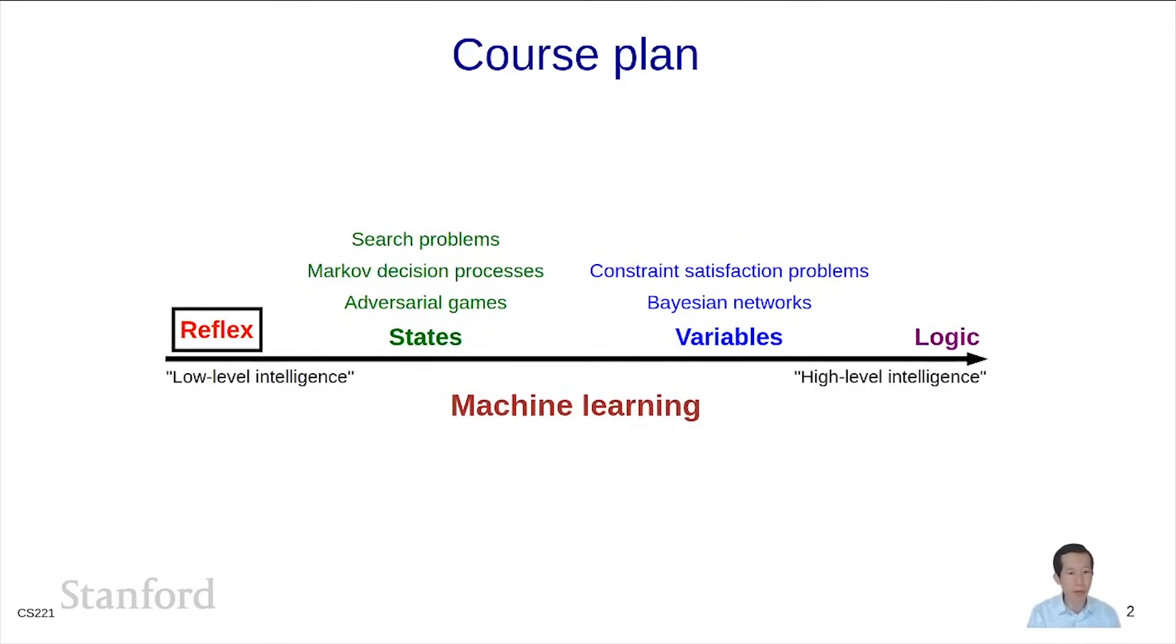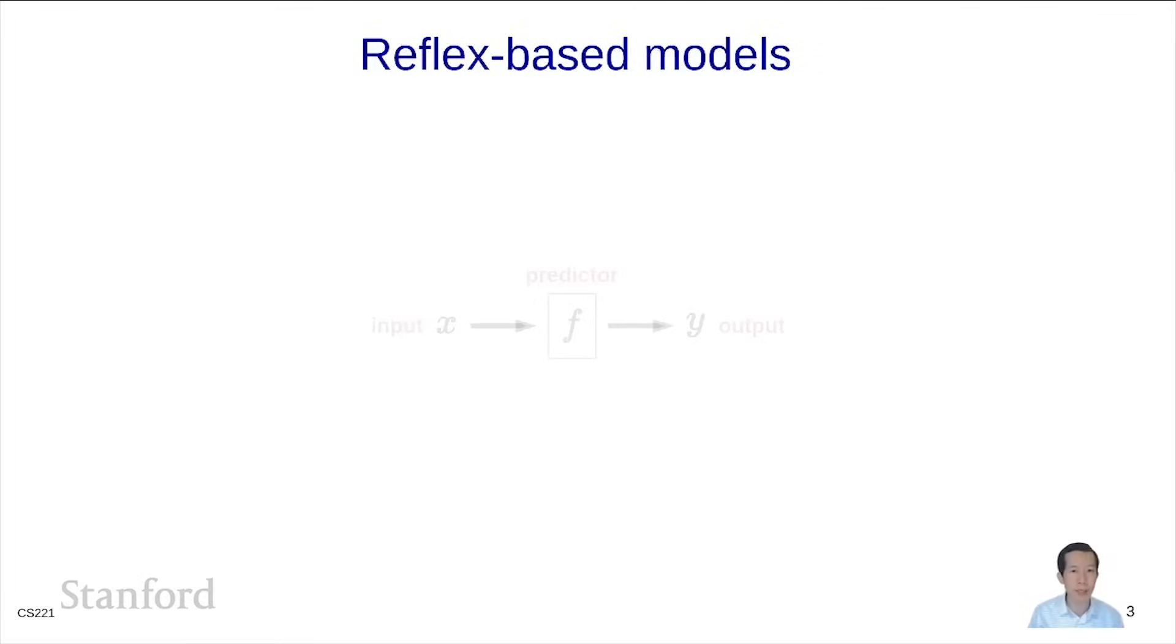We're going to focus on reflex-based models. These are models including linear classifiers and neural networks, in which inference is very fast and feed-forward, which makes them very attractive. In a nutshell, this is what a reflex-based model is.